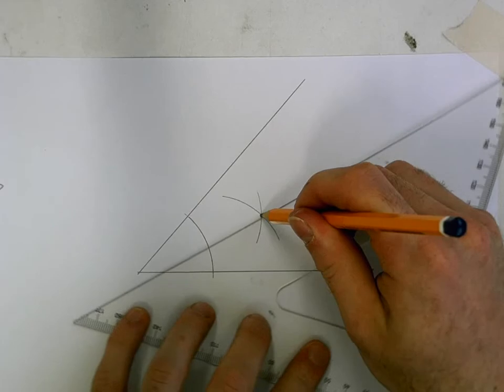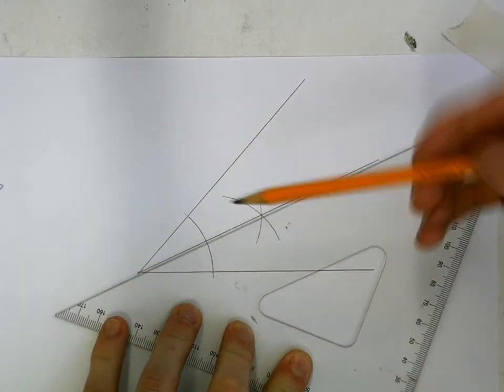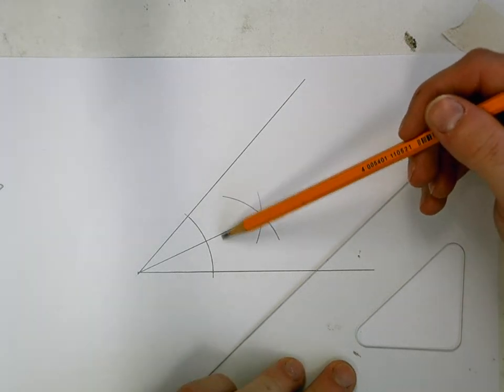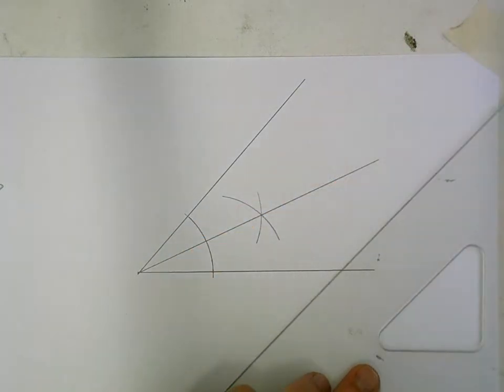Where they cross over each other, if I join that back to my corner, my original angle is cut in half equally. You've bisected that angle.